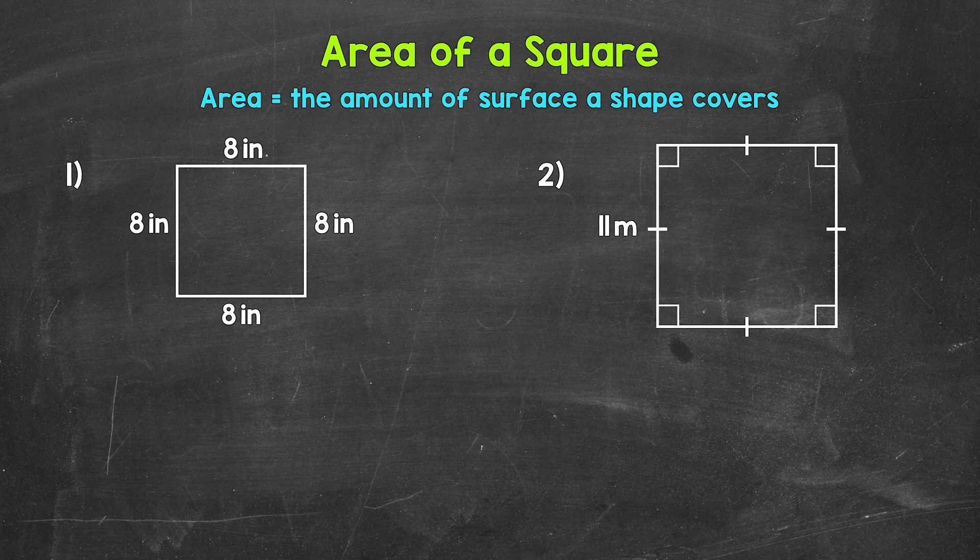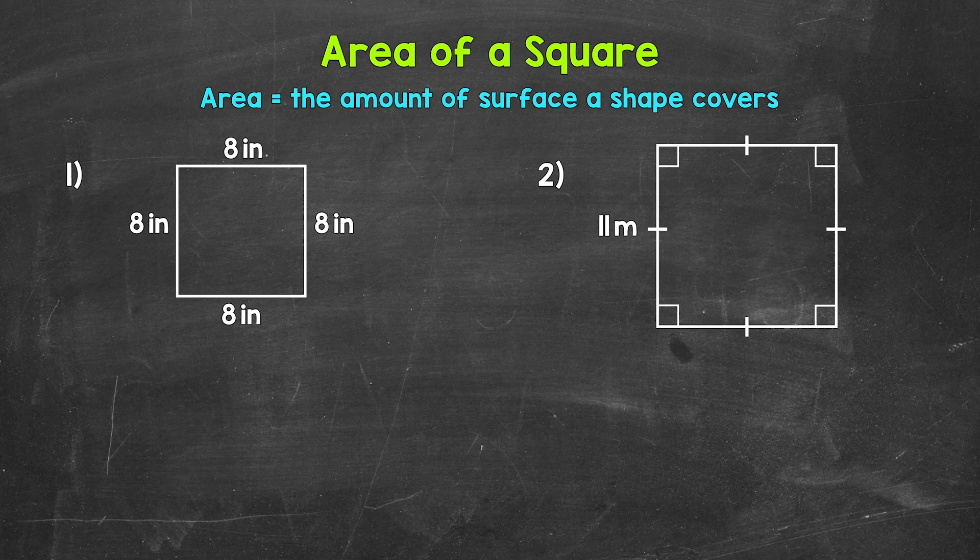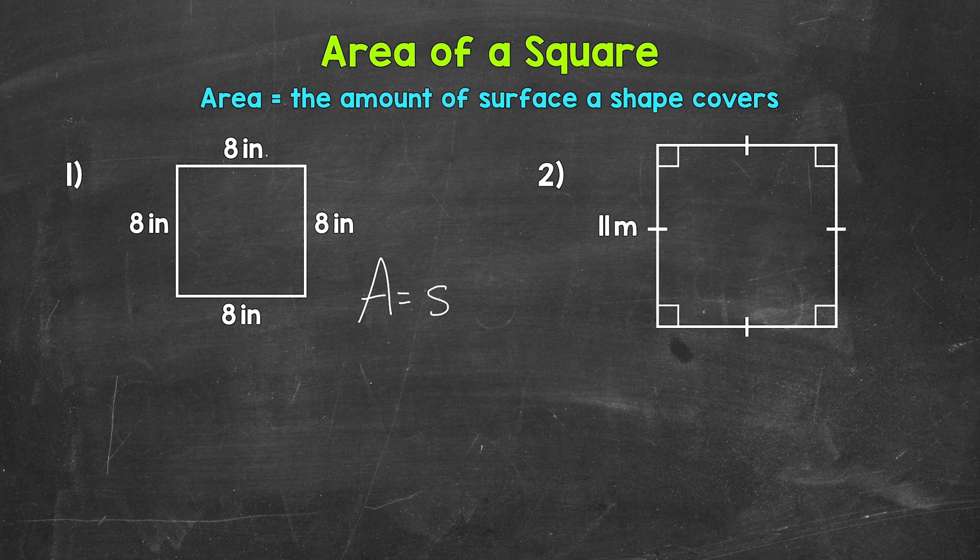Now we're going to take a look at how to find the area of a square. Let's jump into our examples starting with number 1 where we need to find the area of that square. Now for squares, we can find the area by squaring a side length. So we can use the formula area equals a side length squared. And for this square, each side is 8 inches.